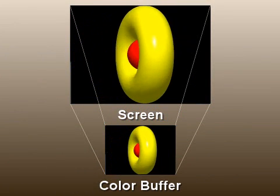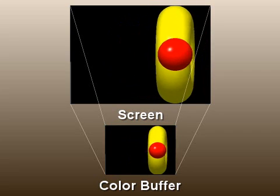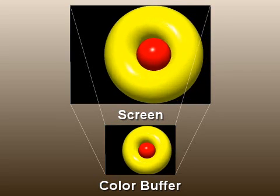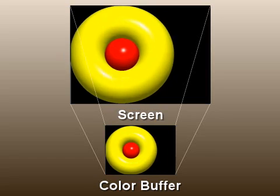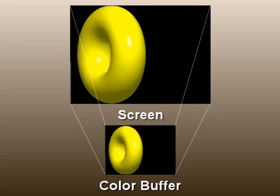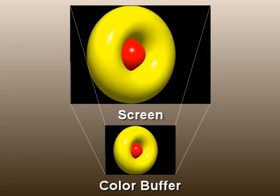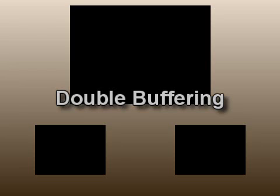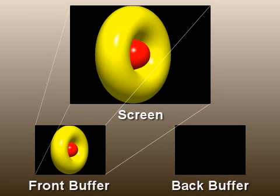Whenever we draw to that buffer, the screen is updated directly. The problem with this is that the screen may get updated before the drawing is done. This can produce a flickery animation. To fix this, we use double buffering. With double buffering, we have two color buffers: a front and a back buffer.